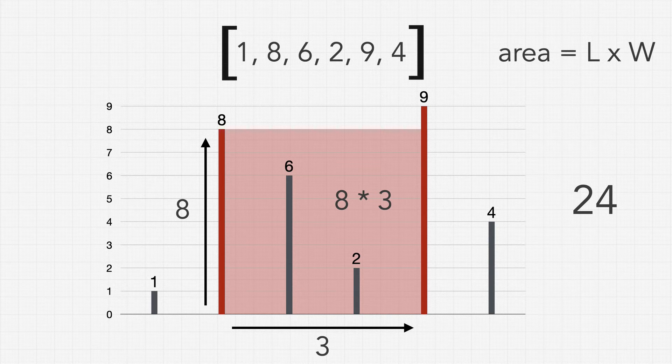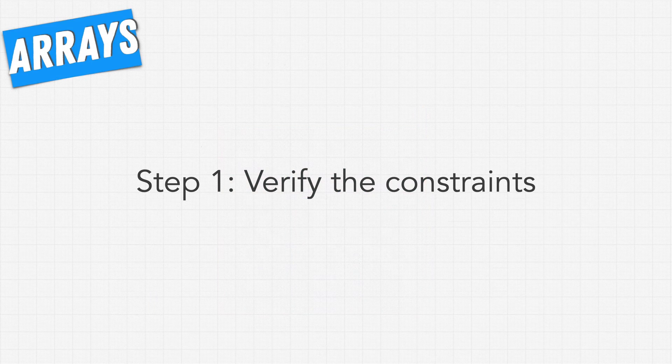So that is the maximum area that we can form from any two lines forming a container in this bar chart. Now before we go into figuring out a solution to generate this let's verify the constraints.